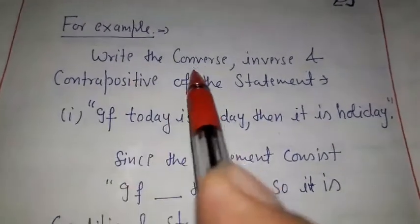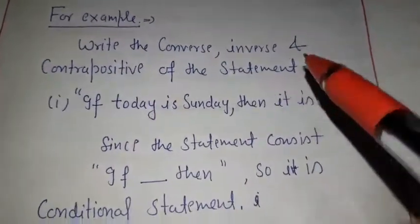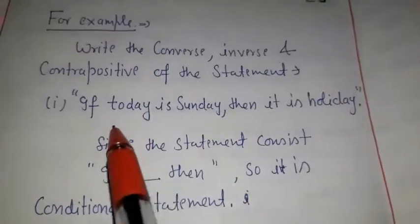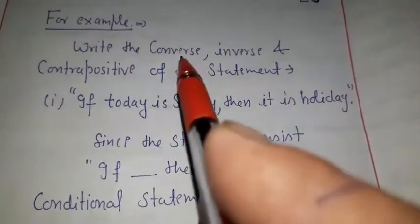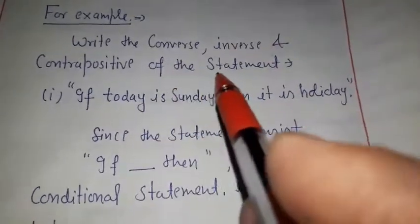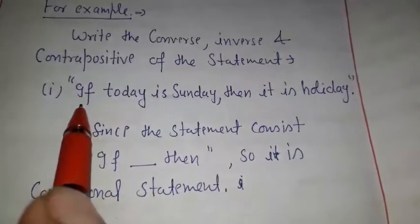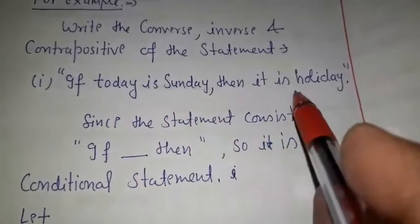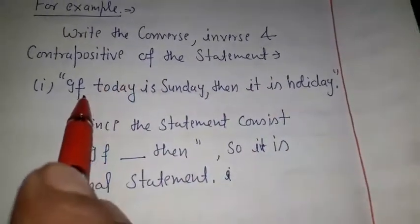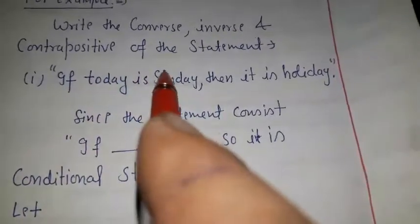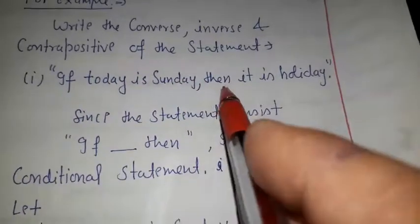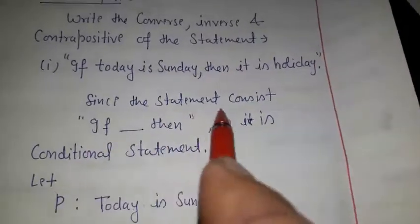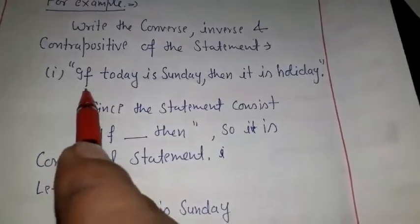Write the converse, inverse, and contrapositive of the following statement. The statement given is: 'If today is Sunday then it is a holiday.' This is the conditional statement — if today is Sunday, then it is a holiday. We can see that the statement contains 'if...then', so it is a conditional statement with two atomic propositions connected by if-then.